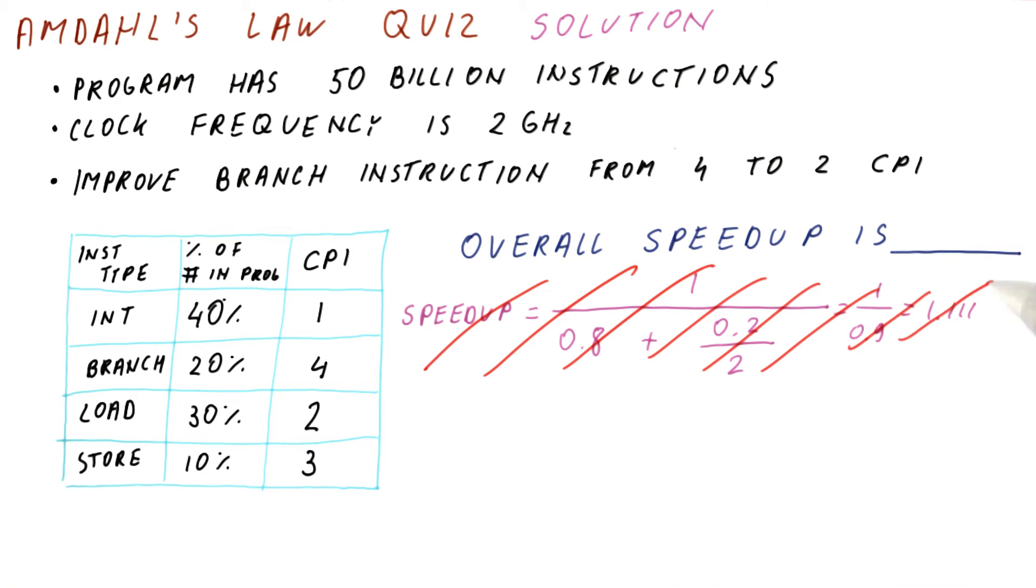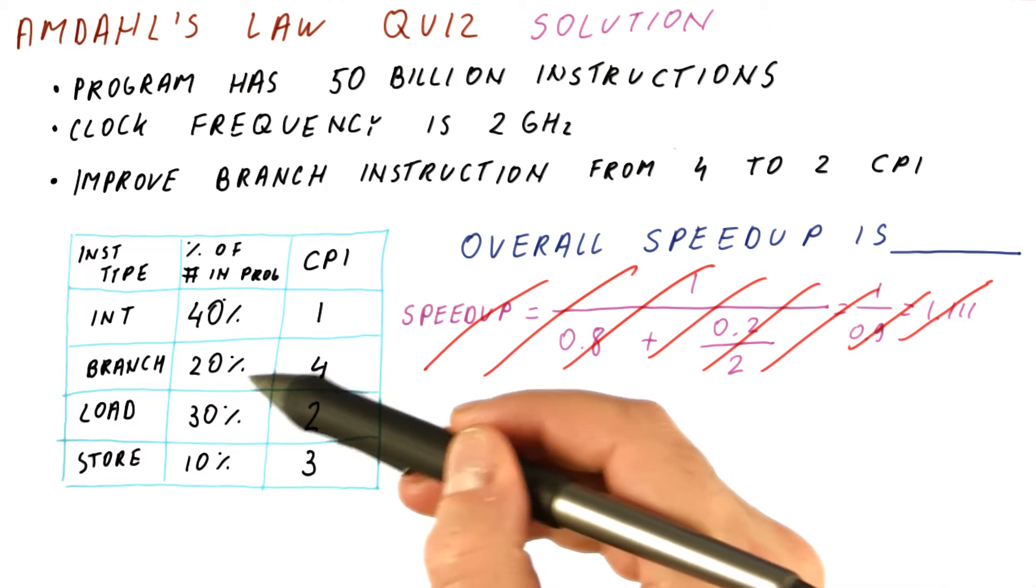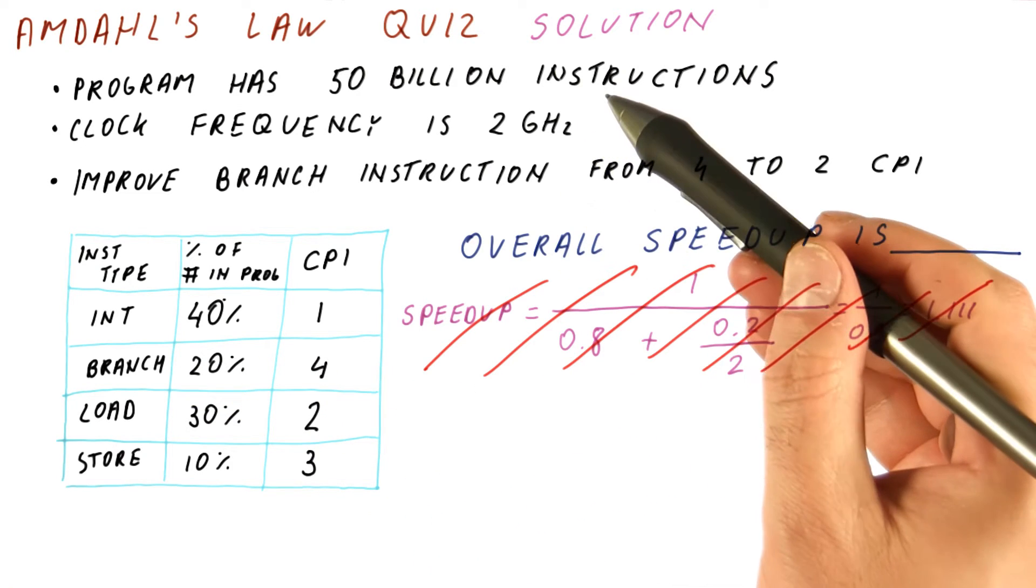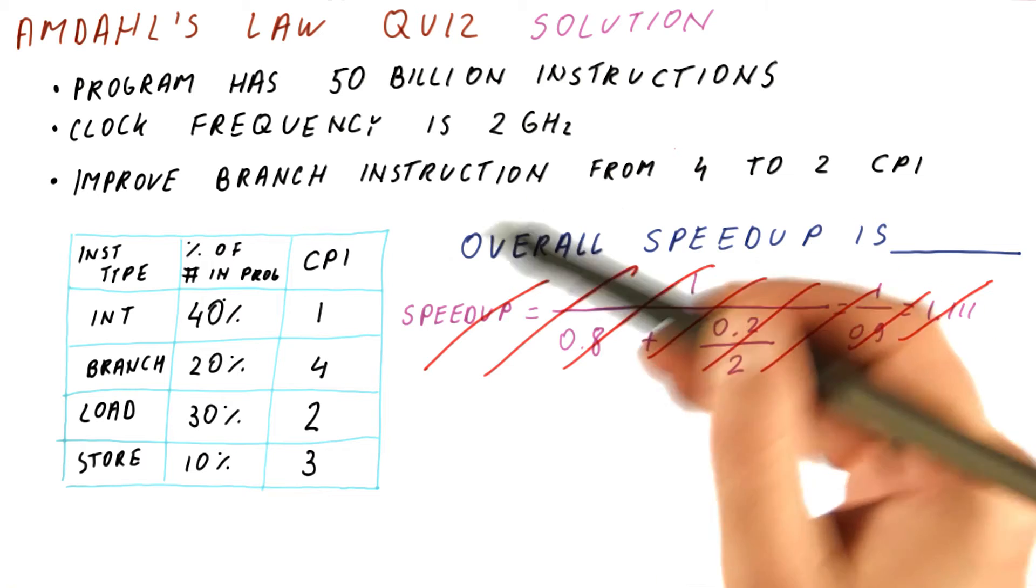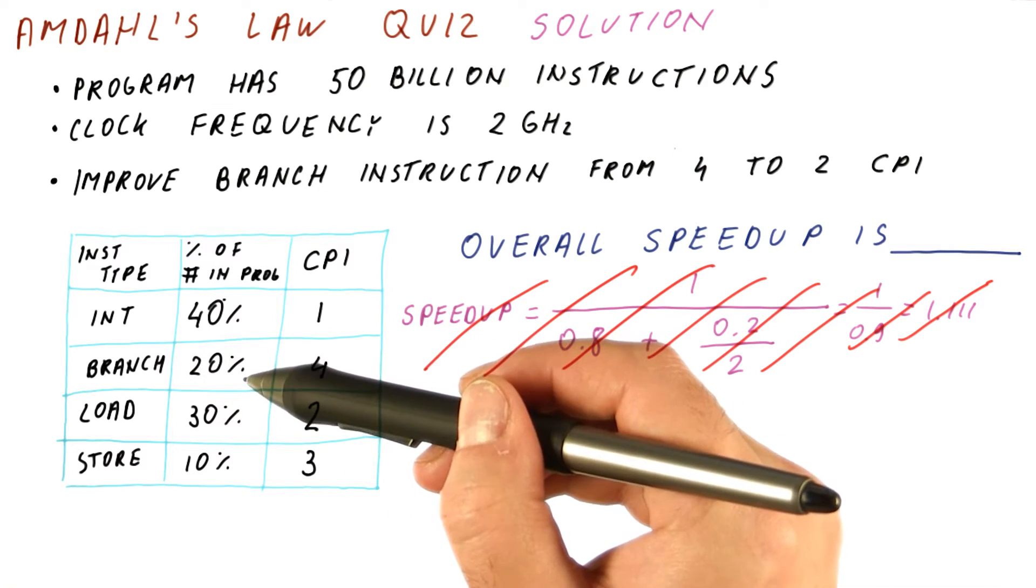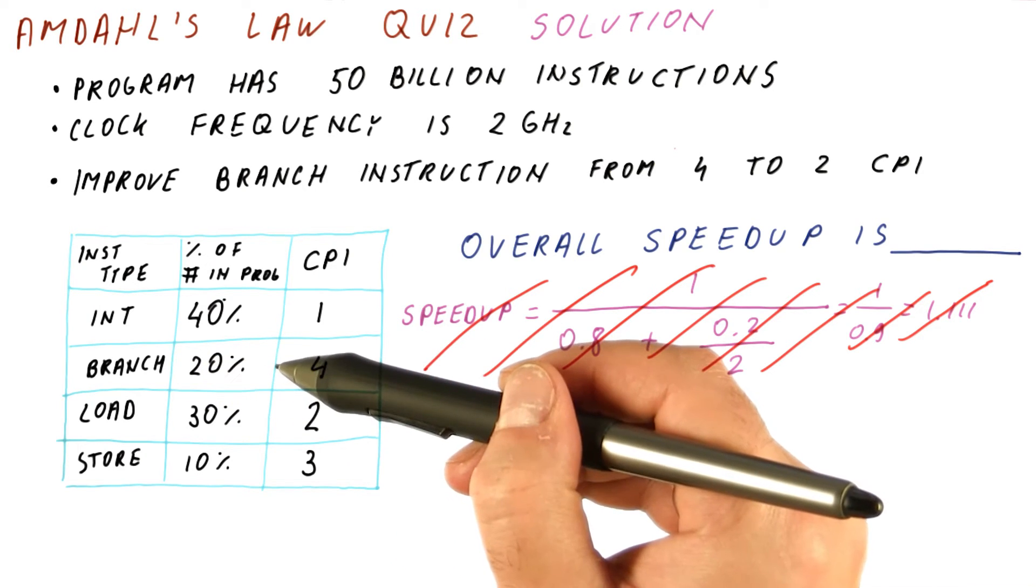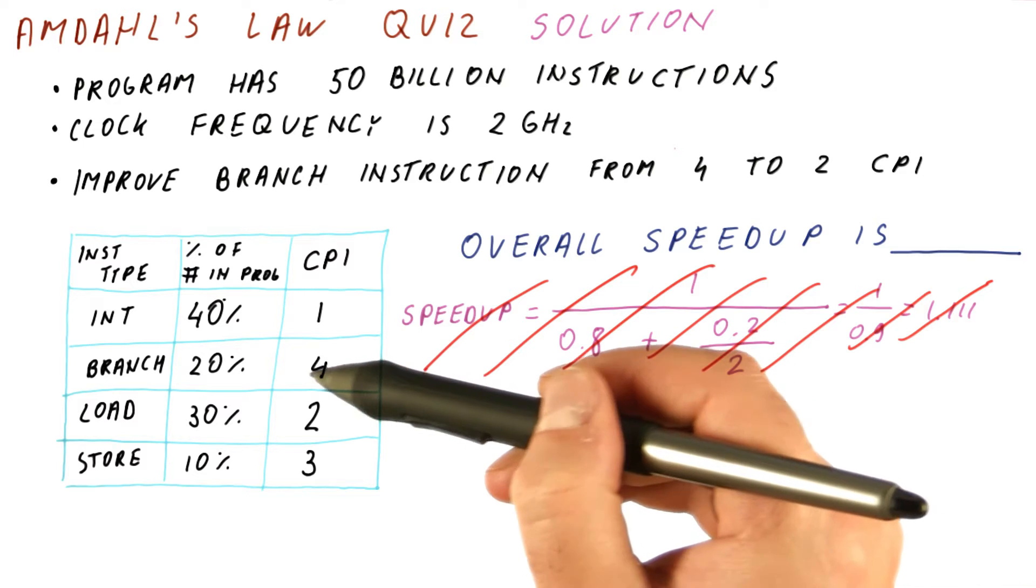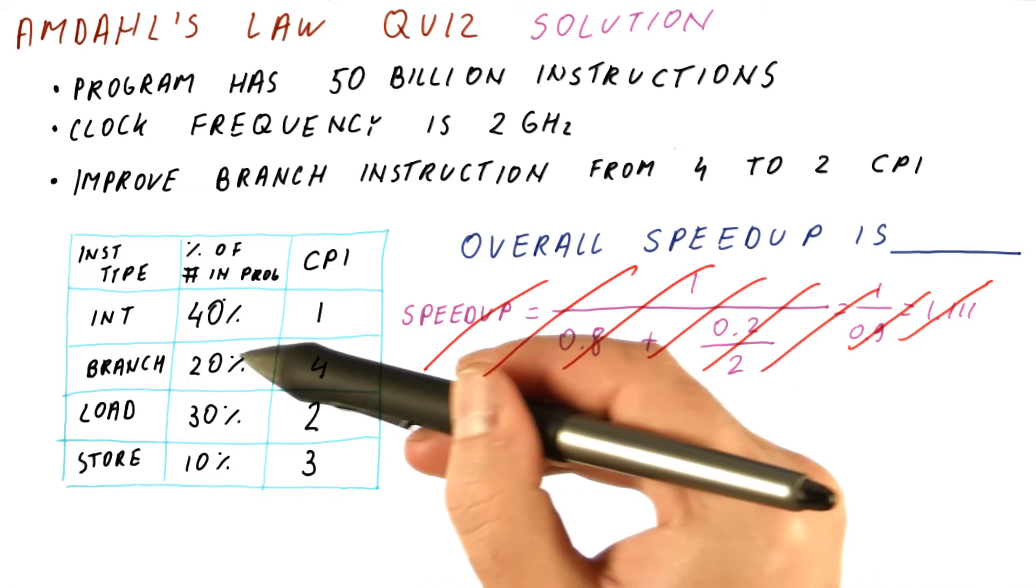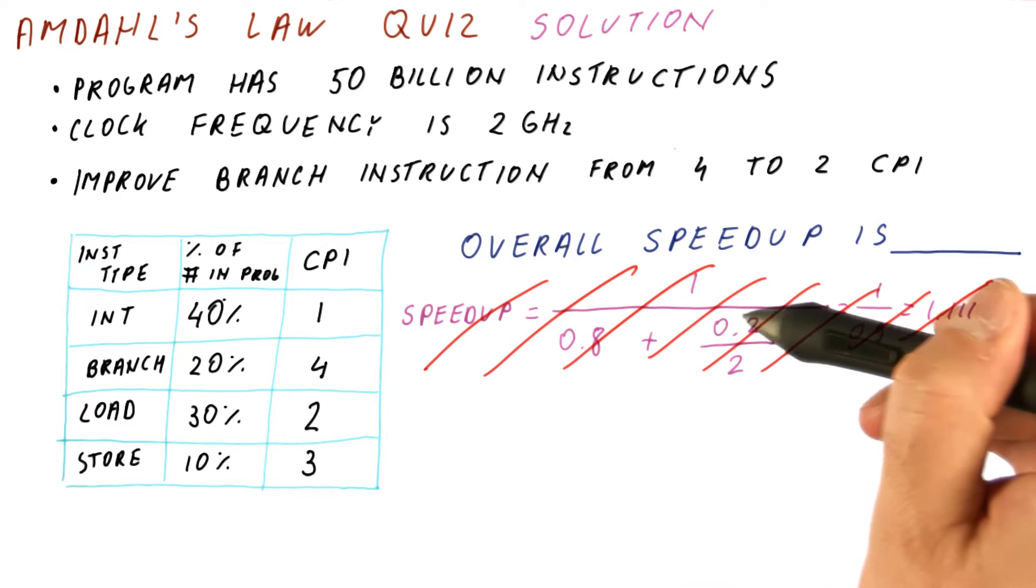The reason this is wrong is that the fraction enhanced is not as a percentage of the overall execution time before the improvement. We said this is how many instructions are enhanced. So branches are 20% of the instruction count. But we don't know what percentage of execution time was spent on branches. And execution time is what we are interested here.